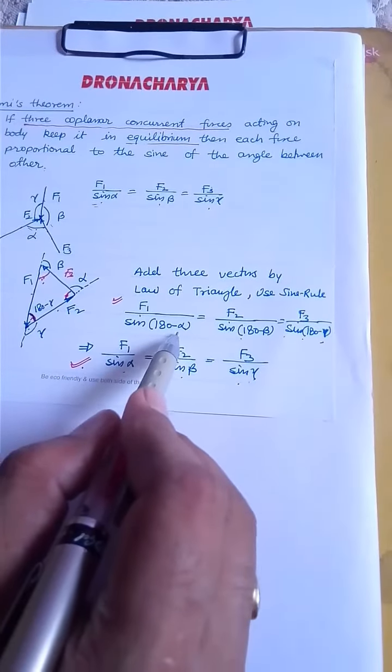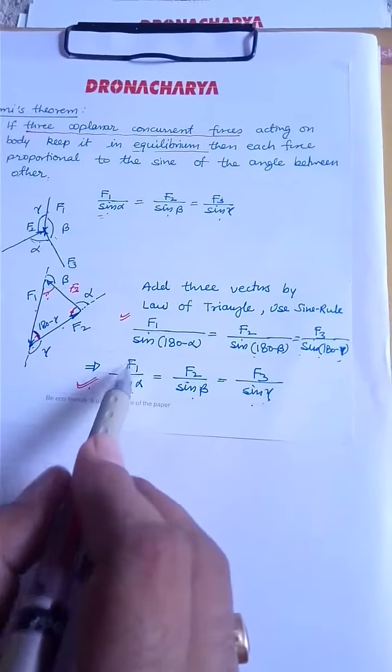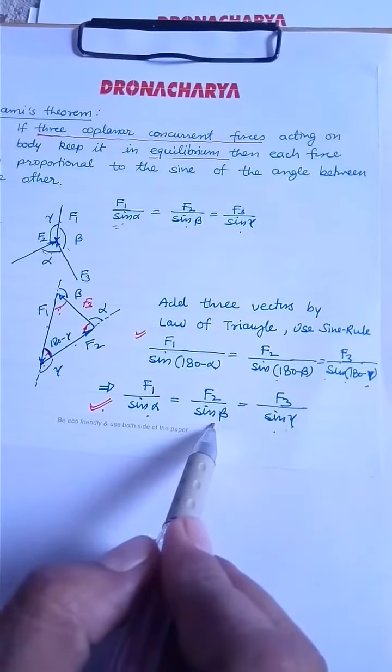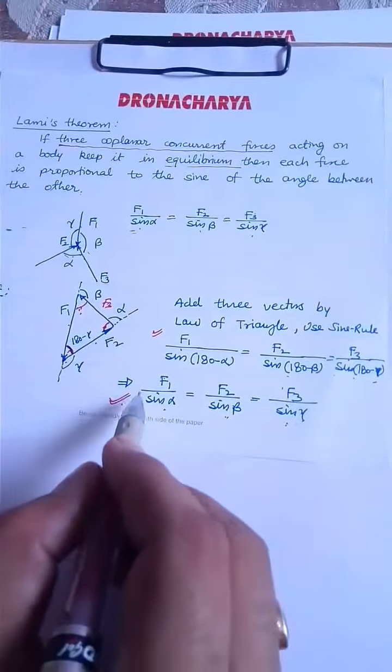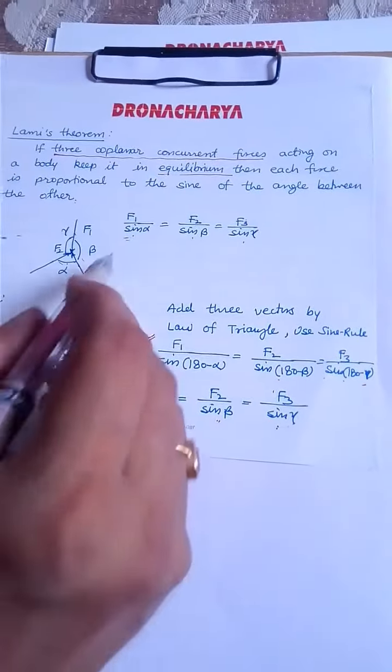So sin(180 minus alpha) is sin alpha. Likewise, we can say F1 upon sin alpha is equal to F2 upon sin beta is equal to F3 upon sin gamma. So this is basically what is Lamy's theorem.